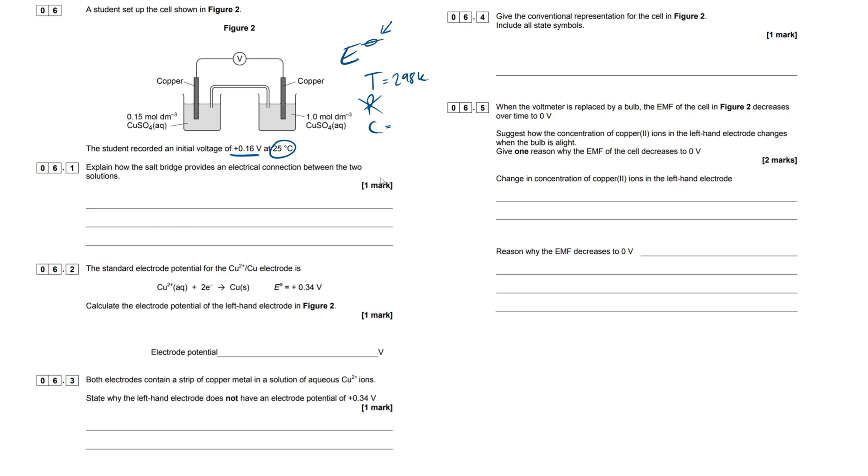So this one's real easy, this one marker. Explain how the salt bridge provides an electrical connection between the two solutions. So this is simply normally a piece of filter paper soaked in potassium nitrate solution, and what that does is it allows ions to flow from one beaker to the next. So our answer here would just simply be, ions can move through the salt bridge. It's really important here to say ions and not electrons. Just try and remember that for electro-potentials. Let's focus on ions here.